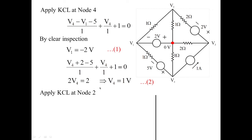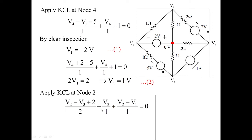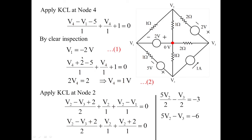Now applying KCL at node 2, which has three branches. The branch currents are: (V2 − V3 + 2) / 2 between node 2 and node 3; V2 / 1 between node 2 and the reference; and (V2 − V1) / 1 between node 2 and node 1. Simplifying and substituting V1 = minus 2 volts gives equation 3: 5V2 − V3 = minus 6 volts.